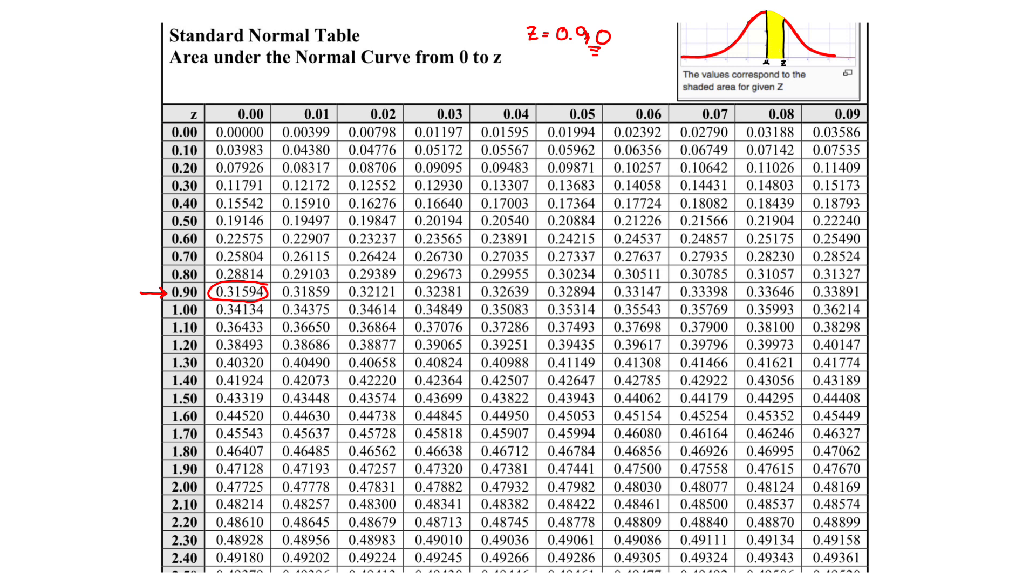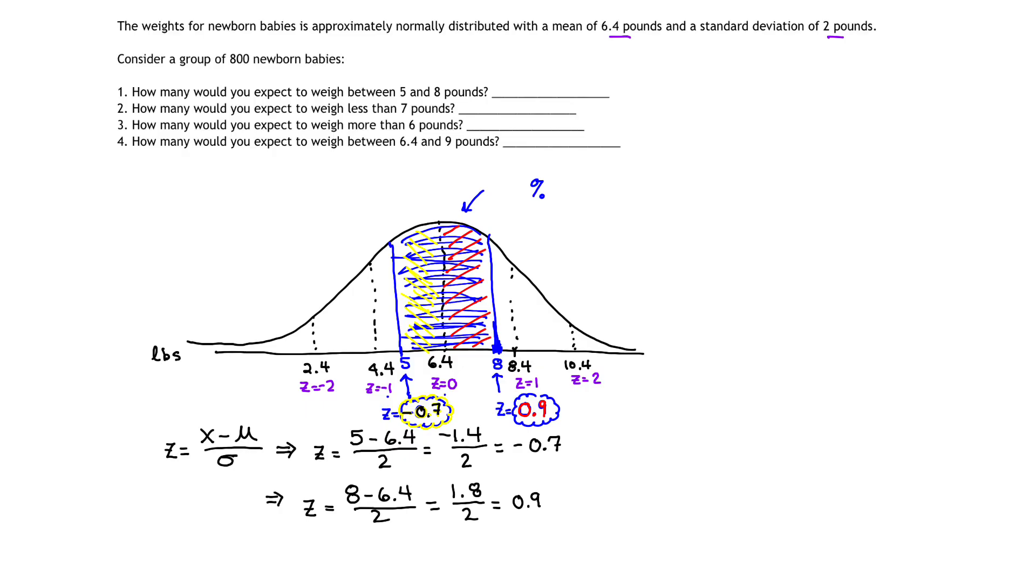I'm going to copy that down and go back to the previous page and write down that the area that corresponds to that red band, according to our table, is 0.31594, or if I like, 31.594%. That's the percent right there.